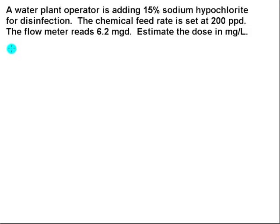A water plant operator is adding 15% sodium hypochlorite for disinfection. The chemical feed rate is set at 200 pounds per day. The flow meter reads 6.2 million gallons per day.